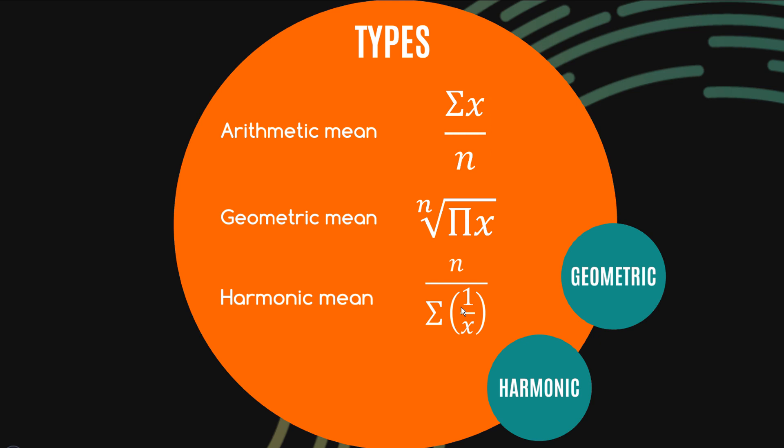A harmonic mean is quite interesting too what you do there is you actually invert all the observations you can see we've got one on x here all those are being summed together you invert all of the observations then find the average of all the inverted observations and finally you invert back that average but look in reality you're going to be dealing with the arithmetic mean 99% of the time but in certain circumstances these do pop up and they're actually more interesting if you ask me hence why I'd like to focus on them.